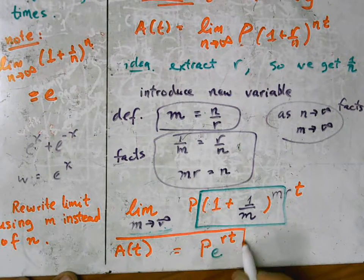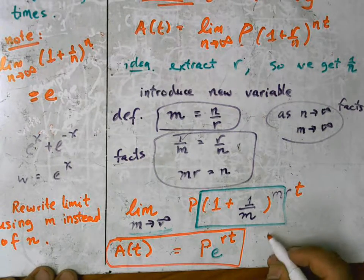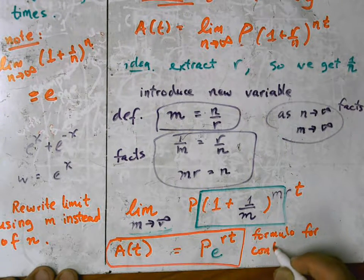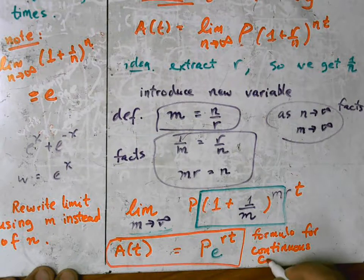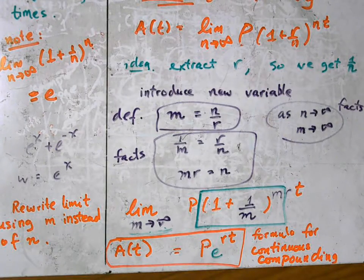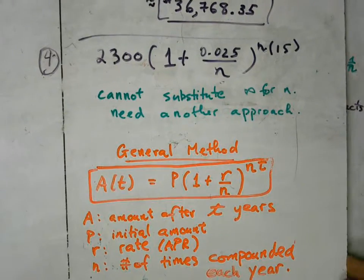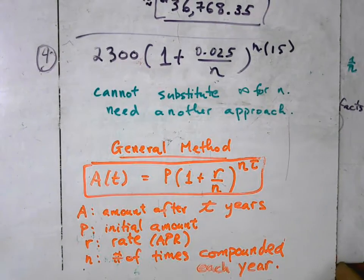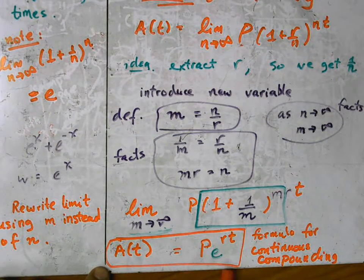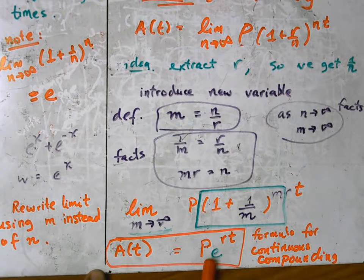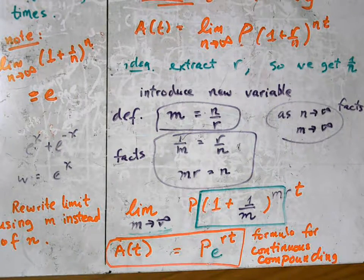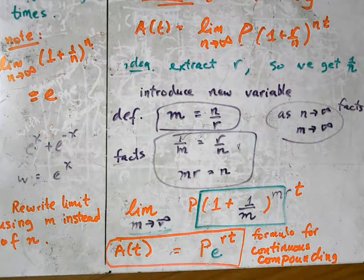So this is where pert comes from, and this is the formula for continuous compounding. So rather than do what we suggested before by just substituting infinity for n, we don't need to do that anymore. We have a different approach here where infinity has been removed in some sense and infinity has been captured in this beautiful number e. And we have a very short and catchy equation to use. So now let's get back and solve that problem.